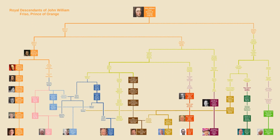Next up, we have the royal descendants of John William Friso, Prince of Orange. Those of you who are fans of royal genealogy probably know that the most recent common ancestor for all the monarchs of Europe is this fellow at the top. A lot of the current monarchs of Europe can trace themselves to Queen Victoria, and many can also trace their lines to Christian IX of Denmark, but not everyone traces to both those individuals in the exact same way. So if you're looking for just one individual who's the common ancestor of everyone — not just the kings and queens, but also the Prince of Monaco, Grand Duke of Luxembourg, and Prince of Liechtenstein — the most recent common ancestor is this Prince of Orange at the top.